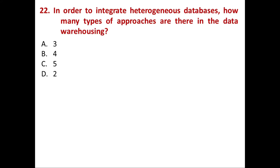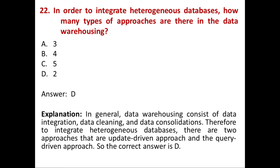Next question: In order to integrate heterogeneous databases, how many types of approaches are there in data warehousing? Option A: 3. B: 4. C: 5. D: 2. Answer is Option D, 2. Data warehousing consists of data integration, data cleaning, and data consolidation. Therefore, to integrate heterogeneous databases, there are two types of approaches: the update-driven approach and the query-driven approach. So the correct answer is D, 2.